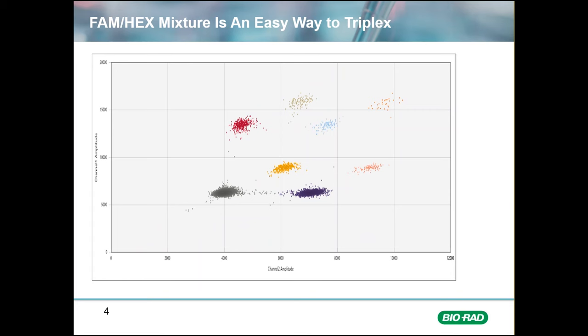Probe mixing triplex multiplexing allows for three targets to be fully and robustly quantified. Here I am showing an example of our RT ddPCR SARS-CoV-2 ddPCR kit that detects COVID-19 RNAs in a single well. The simplicity of probe mixing allowed us to create a single well ddPCR test very quickly.